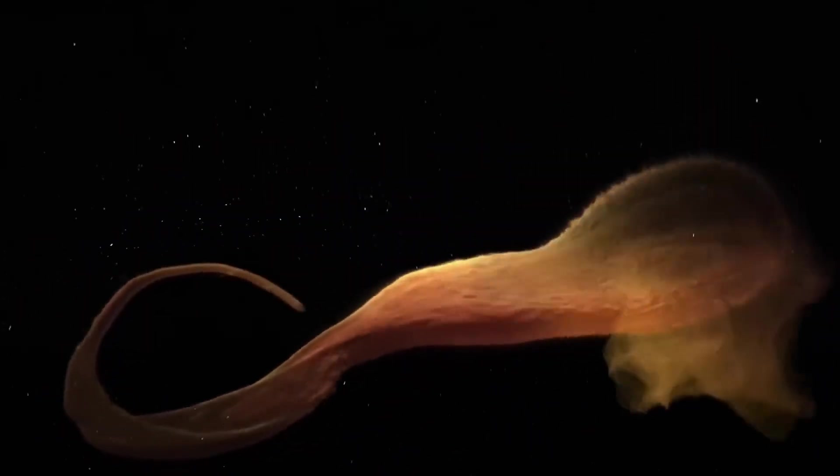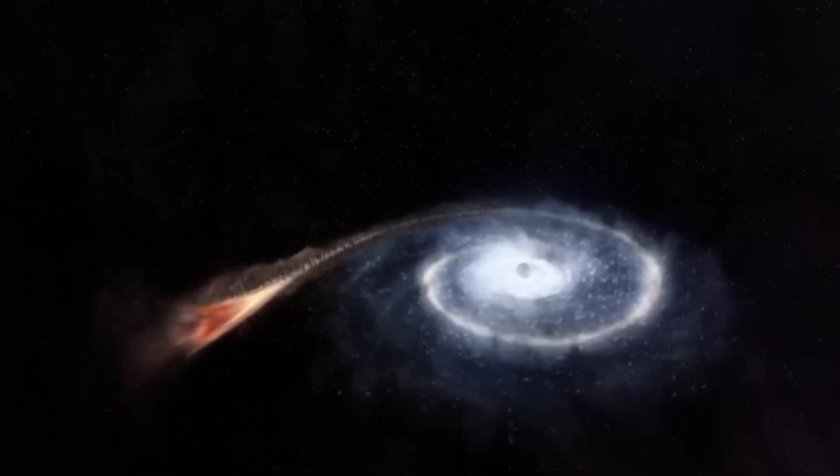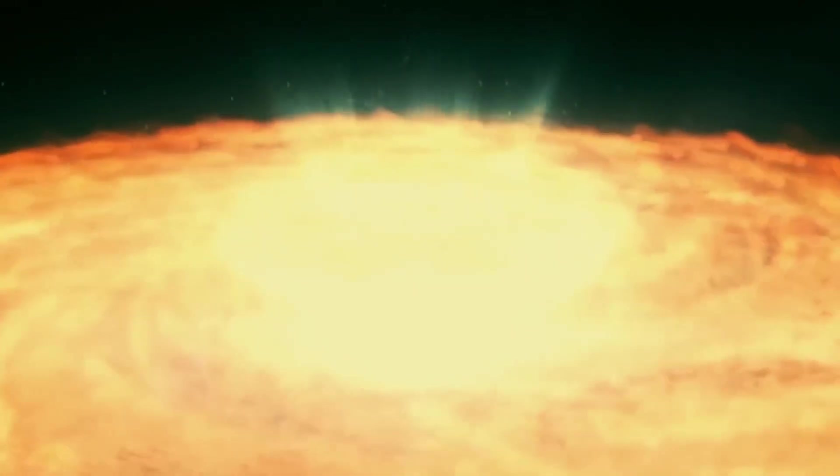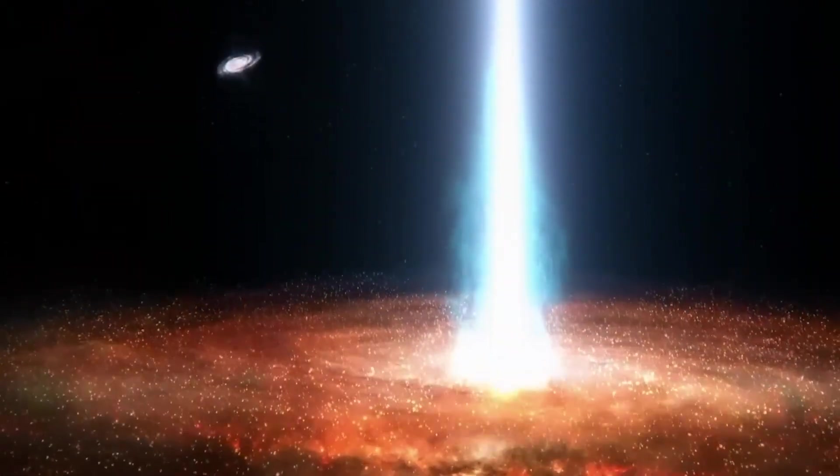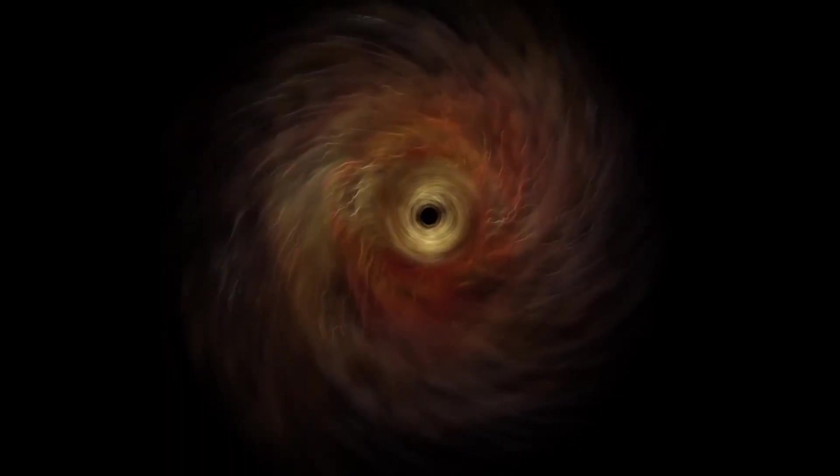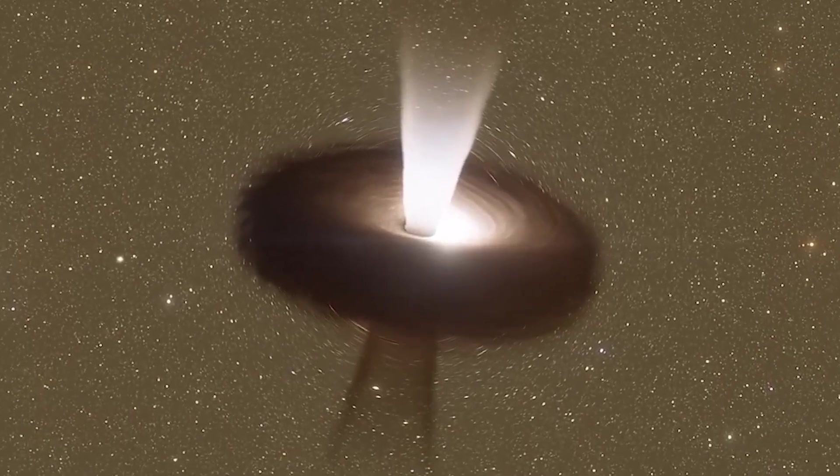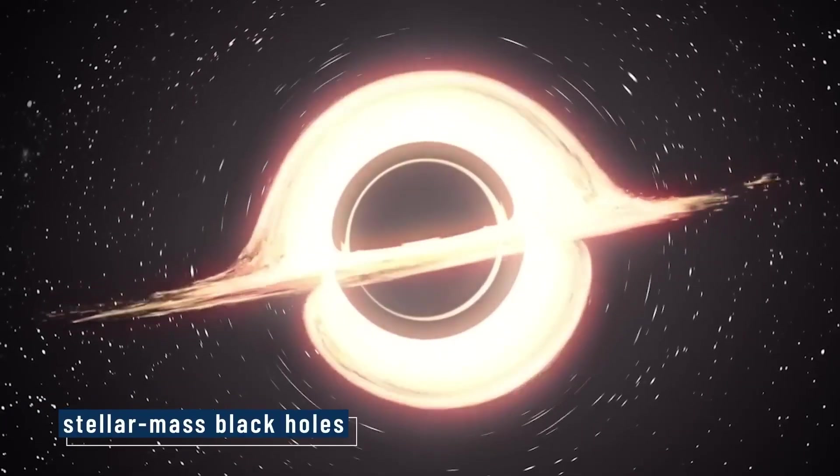First, there is the event horizon. This critical boundary forms the outer shell of a black hole, acting like a definitive cosmic point of no return. Nothing, not even a single photon of light, can possibly escape once it crosses this invisible border. It is not a physical wall, and you wouldn't even feel a distinct sensation if you pass directly through it. But from an outside observer's perspective, time itself seems to stop completely at this very edge.